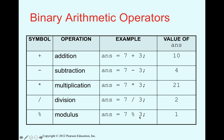Modulus (%) gives the remainder of integer division. For example, 7 % 3 equals 1 because 7 divided by 3 gives 2 with a remainder of 1 (since 2 × 3 = 6, and 7 - 6 = 1). This is how modulus works.